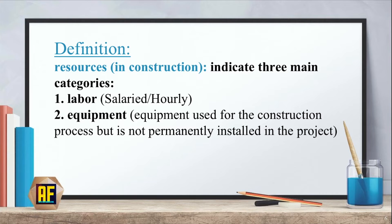Equipment is the equipment that is used for the construction process, but is not permanently installed in the project. For example, the backhoe, the excavator, the tractors, everything that is used and doesn't stay.